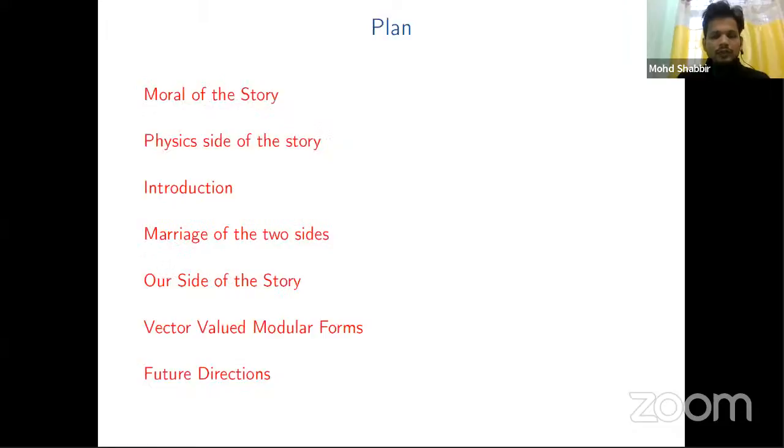So let's start. The moral of the story is here. First, I'll start with the moral of the story, then describe the physics side of the theory, then the math side of the story, and the marriage of the two sides. Then we describe our work and some results from there, like vector valued modular forms.